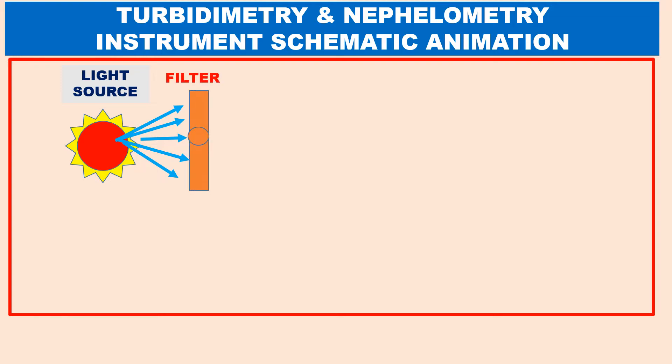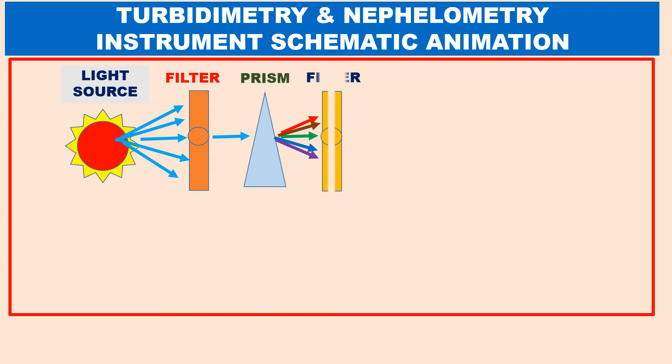In this slide, a schematic diagram of turbidimetry and nephelometry is shown with animation. First, the light source emits light of all wavelengths. The light beam is allowed to pass through a filter, which allows only a narrow beam of light. This narrow beam falls on a prism, which disperses the light into several wavelengths. A second filter is then used to allow only one particular wavelength of light. In this way, we have converted polychromatic light into monochromatic light using these three setups.